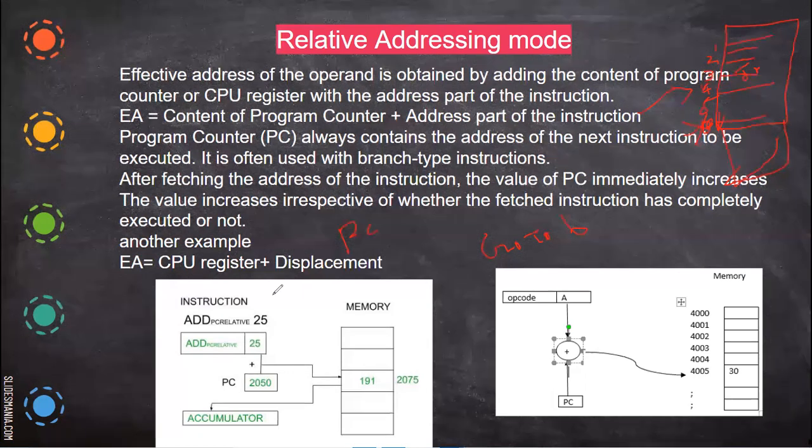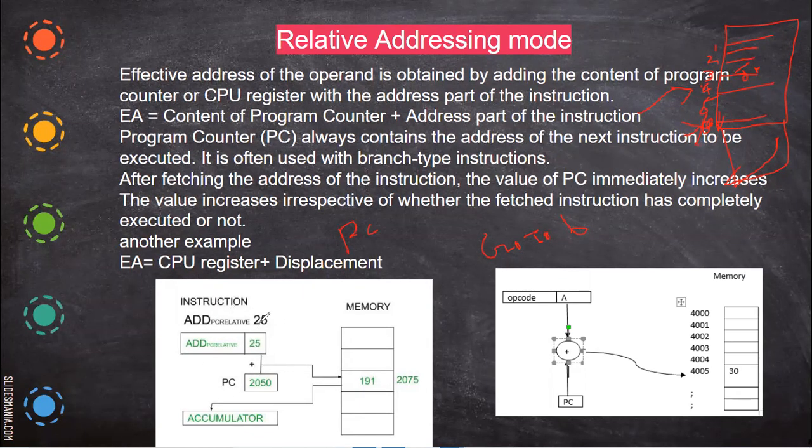Not only for that, displacement. For example, here ADD is an instruction. ADD 25 means this 25 value is added with the program counter. When you add, now it is 2075, it goes to that memory location and that data will be placed in accumulator. Whatever may be the previous value of accumulator, that value is added with 191 and it is replaced in accumulator.